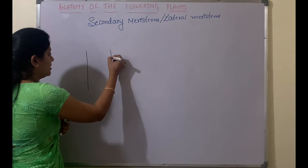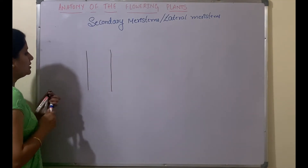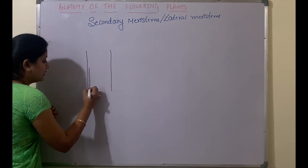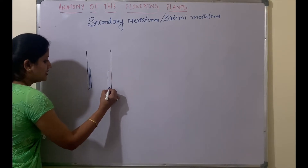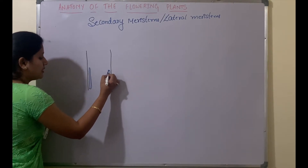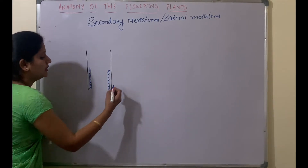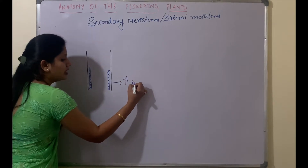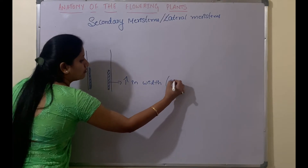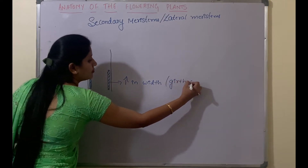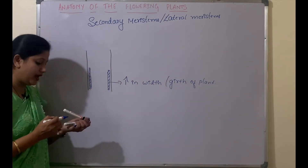If this is a plant body or a stem axis, then on the stem, these meristems are present on the peripheral sides or the lateral sides. And these are responsible for the increase in width or girth of the plant.